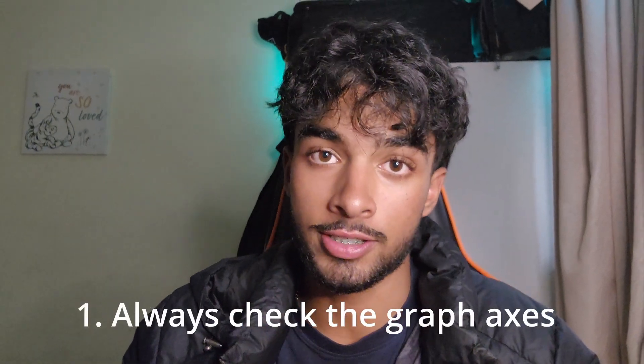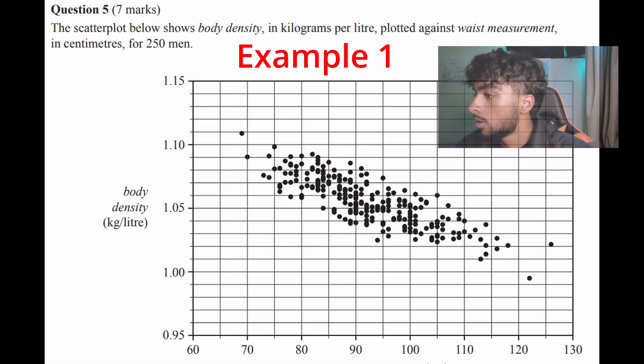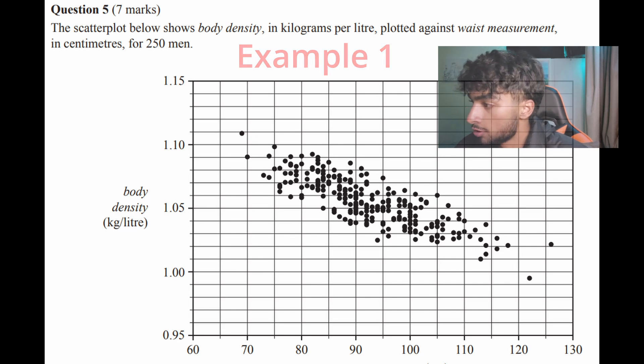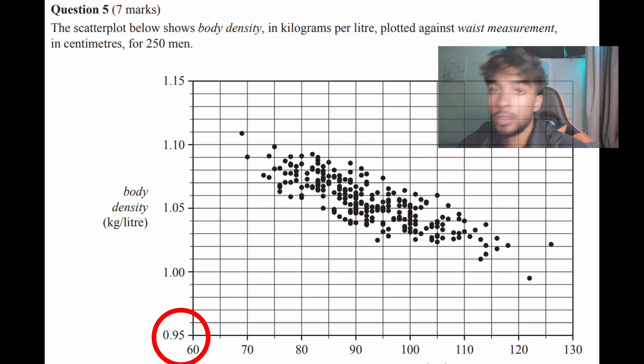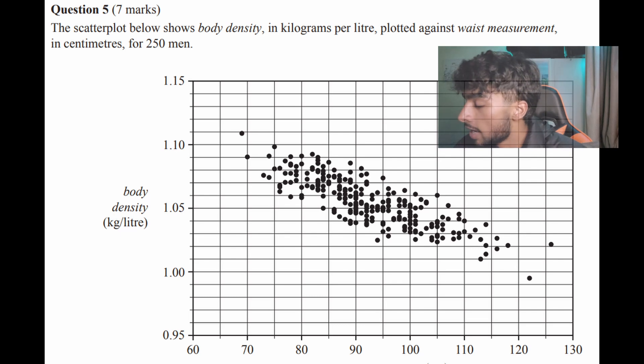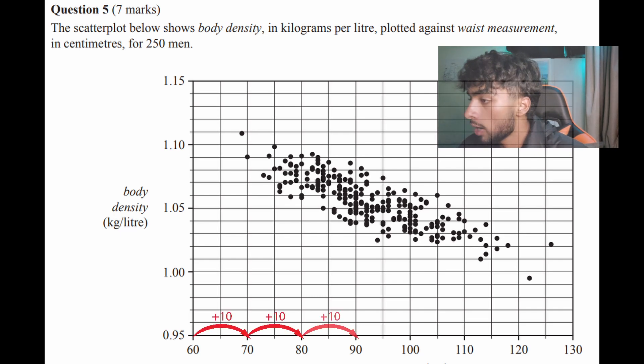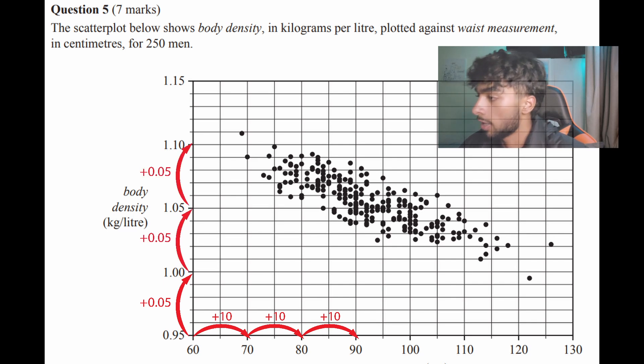First things first, when you're given a graph or scatterplot, always check the axes so you don't get hit by a trick question. As we can see in this example scatterplot, it doesn't start at 0.0 but instead 0.9560. Also note that on the x-axis it goes up by increments of 10, but the y-axis only goes up by increments of 0.05. If you don't take note of this mentally, you might end up with inaccuracies without even knowing it, and these are going to cost you marks.